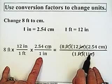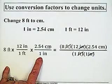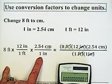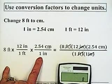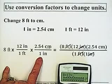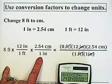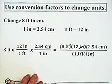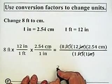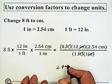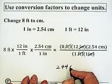Divided by one. Going back to the calculator, this is 8 times 12 times 2.54, which is 243.84. So let's go with 244 centimeters.